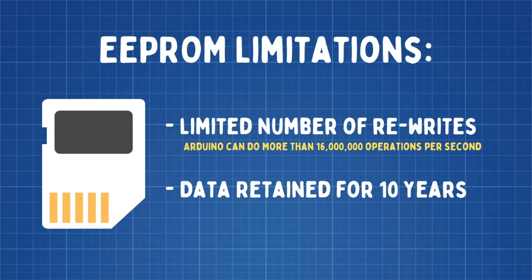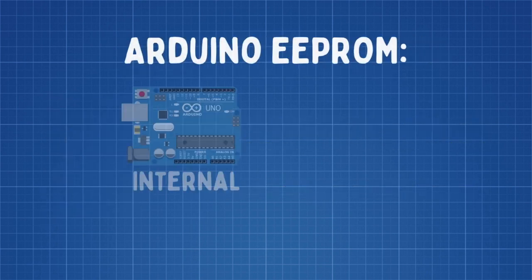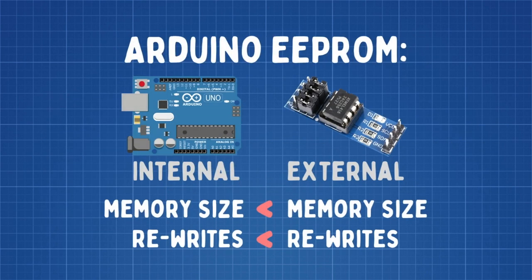So now let's see how to use EEPROM on an Arduino. There are two types of EEPROM for Arduino: the internal EEPROM, which comes built-in in the Arduino, and the external EEPROM, which is a separate module that you can buy. The main differences are that the external EEPROM has a larger size and thus can store more data, and also usually supports a larger number of re-writes.